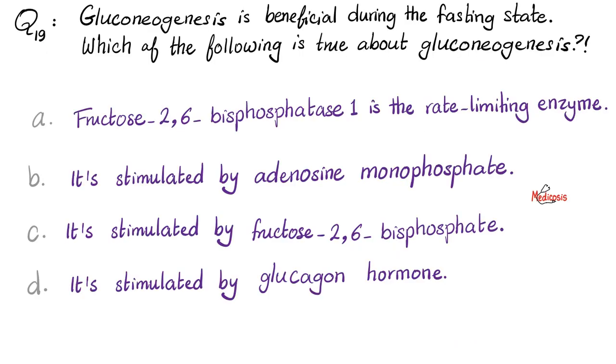Question 19. Gluconeogenesis is beneficial during the fasting state. No kidding. Which of the following is true about gluconeogenesis? Is it A, B, C, or D? Choice A: fructose 2,6-bisphosphate is the rate-limiting enzyme, or is gluconeogenesis stimulated by adenosine monophosphate, or gluconeogenesis is stimulated by fructose 2,6-bisphosphate, or gluconeogenesis is stimulated by glucagon hormone. Let's talk about that.